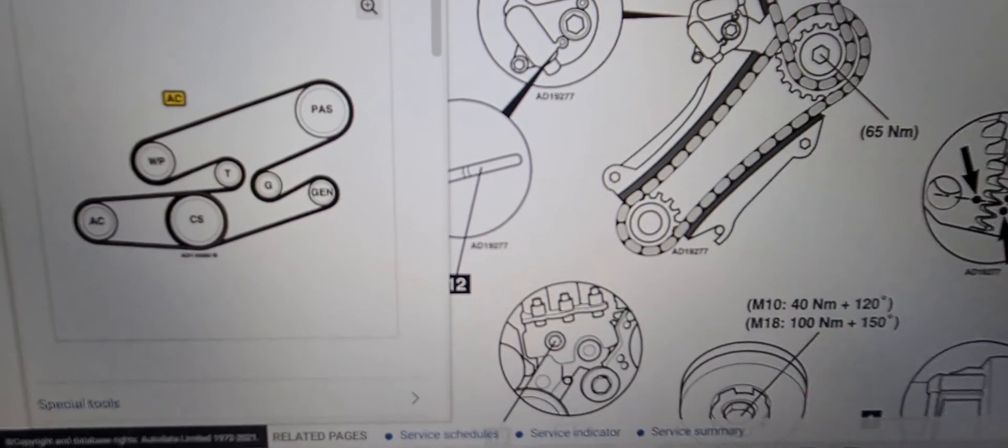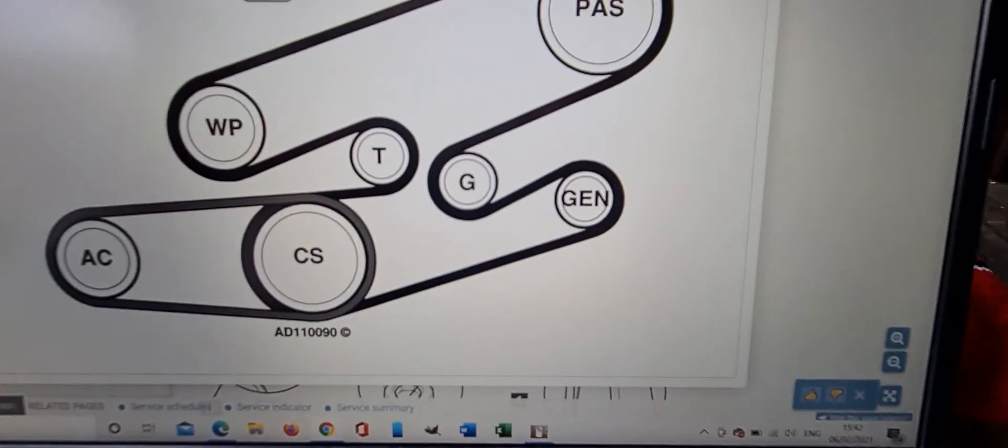Finally we're going to look at the driver belt diagram. That's what that looks like.